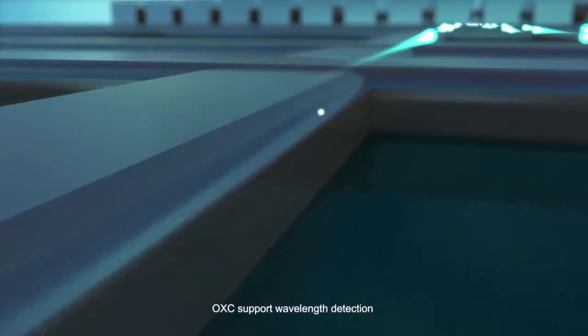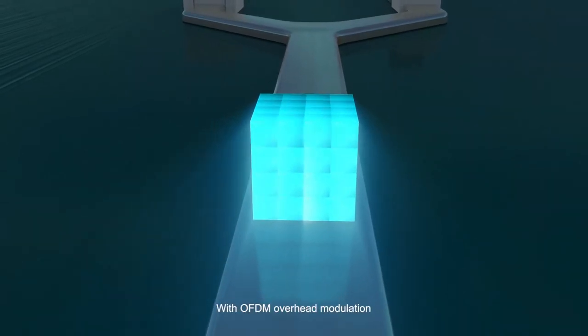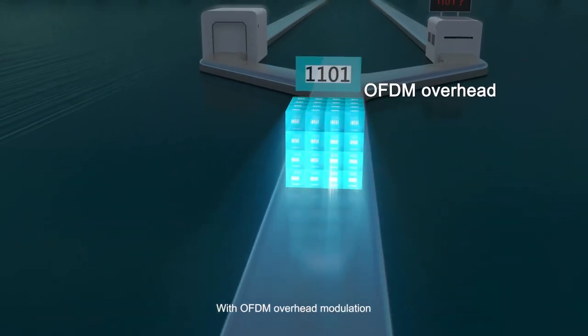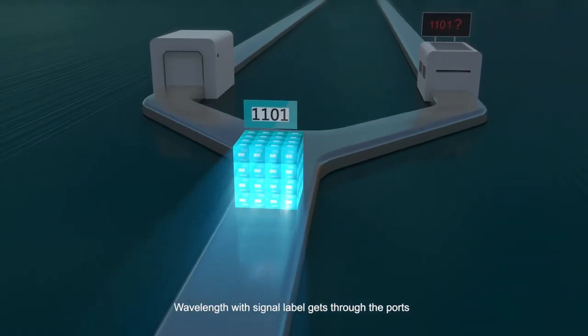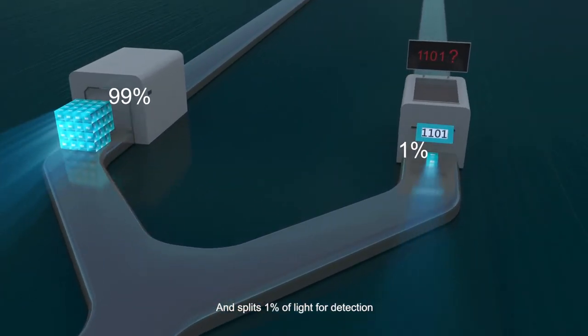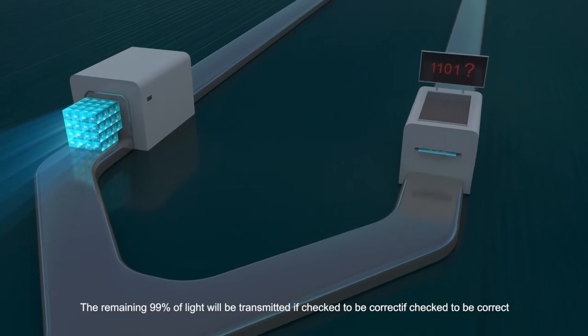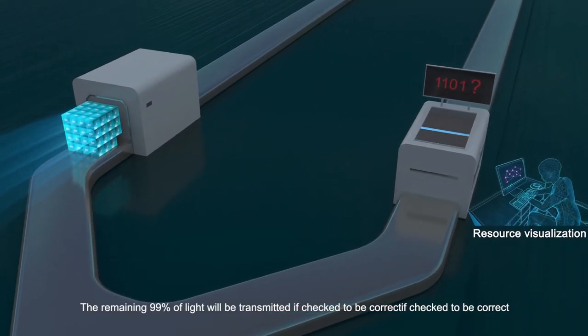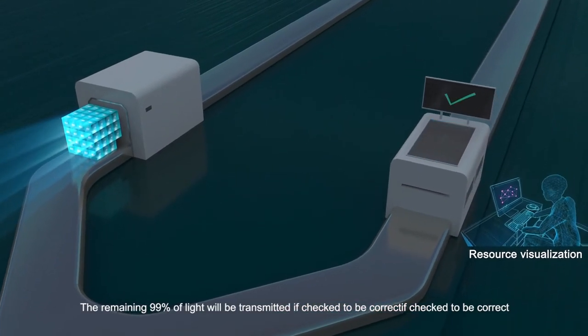OXC supports wavelength detection. With OFDM overhead modulation, wavelength with signal label gets through the ports and splits 1% of light for detection. The remaining 99% of light will be transmitted if checked to be correct wavelengths.